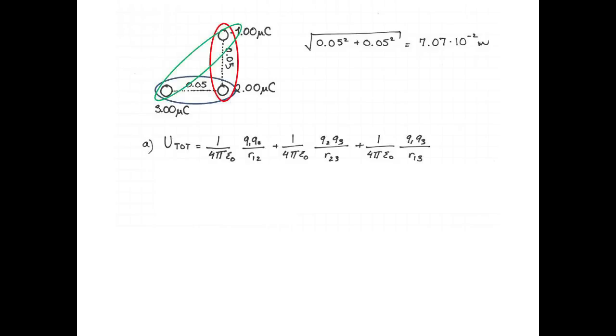The total potential energy of the system is the sum of the potential energy of all the pairs in the system. In this particular system, we have 3 pairs, so the negative 1 and the 2 microcoulomb make up the first pair.